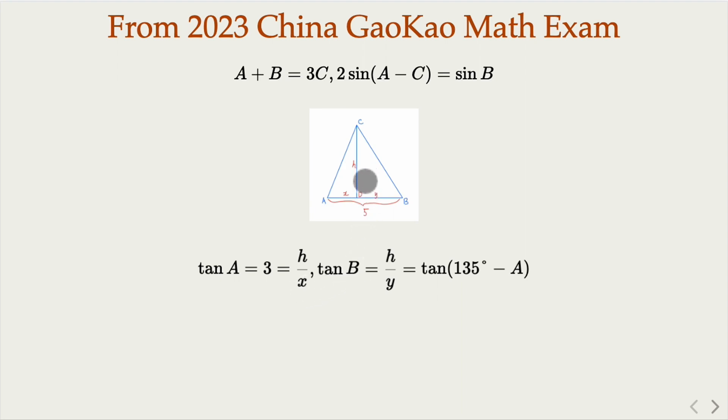So tangent B here is h over y, but then we know that B is 135 degrees minus A. This can be calculated by applying the trig identity for tangent difference of angles. So let's go.